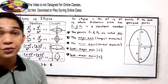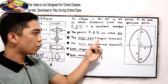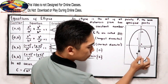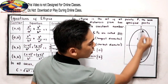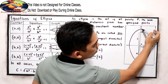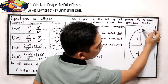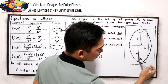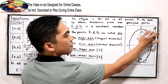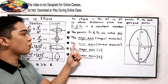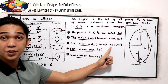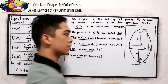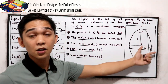You will also encounter the major axis, which is the longest diameter. This is our longest axis, from one vertex to another vertex of our ellipse — that is the major axis. We also have the minor axis, the shortest diameter, from one vertex to another. Those are the four vertices.